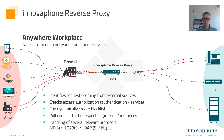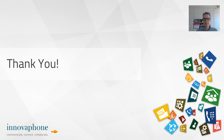It handles different protocols like SIP in the secure version, H.323 in the secure version, LDAP for directory access, and HTTPS for different applications. Everything is included in the normal InnovaPhone OS and you don't need anything more than a normal InnovaPhone box.